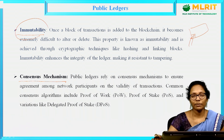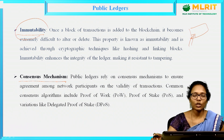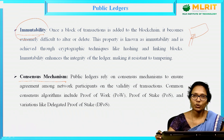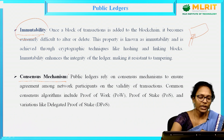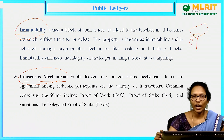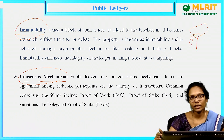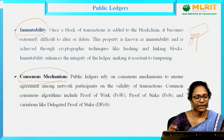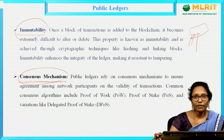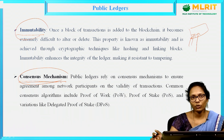Next is consensus mechanism. As public ledger is a concept of blockchain, it also follows the consensus mechanism. As there is no central authority to monitor or verify these transactions, we follow a mechanism called consensus mechanism to provide the validity of the transaction. Before including a transaction into the public ledger, we need to verify whether the transactions are valid or not.